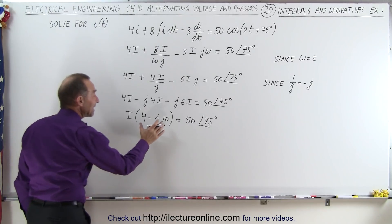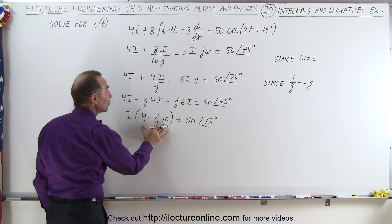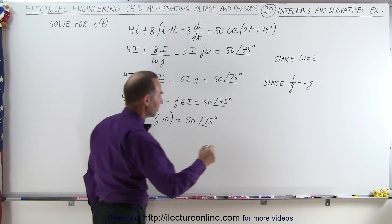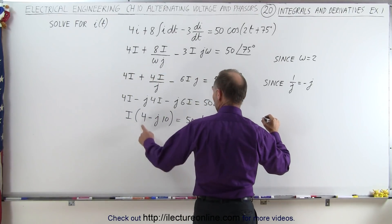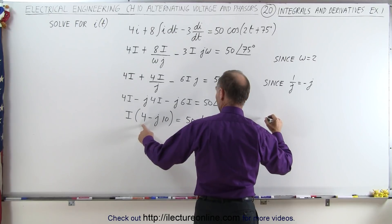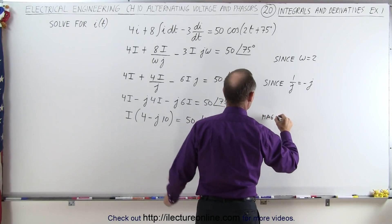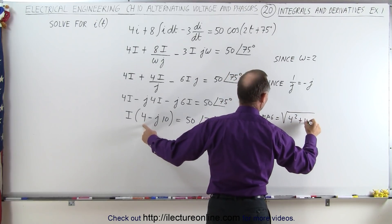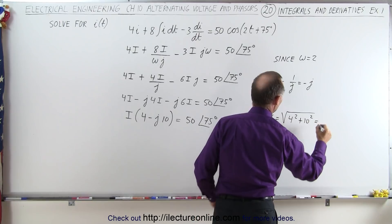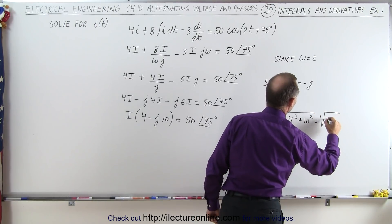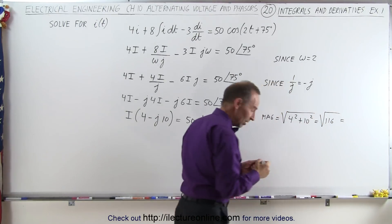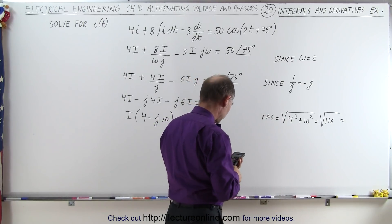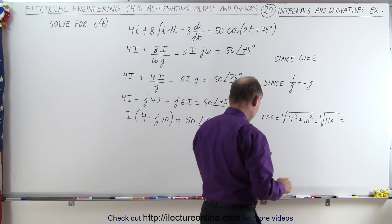Next, what we want to do is take this and convert it to magnitude and phase. And so you can see that the magnitude of this would be the magnitude that would be equal to the square root of 4 squared plus 10 squared, we don't care about the negative sign since we're squaring, so it would be equal to the square root of 116, which is equal to, with a calculator, 10.77.